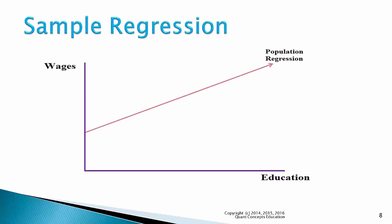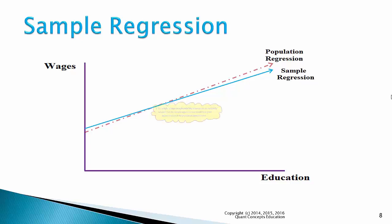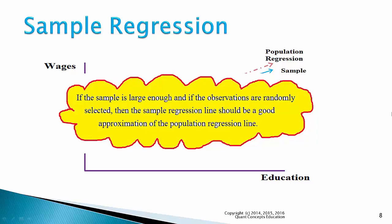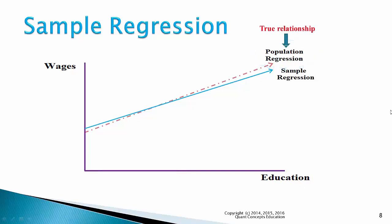Suppose we have the following population regression line. Recall that the population is assumed to be unobservable, as it's infinitely large — it's too costly or time consuming to survey every person in the entire world. So this population regression line is unobservable. However, we can estimate it with our sample regression line. We take a random sample of individuals from the population, say 50 people, and record their wages and education values. If the sample is large enough and observations are randomly selected, the sample regression line should be a good approximation of the population regression line.